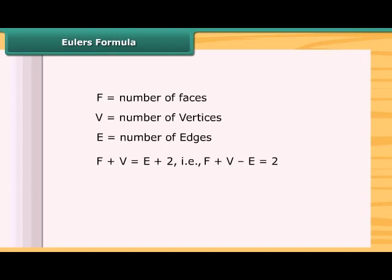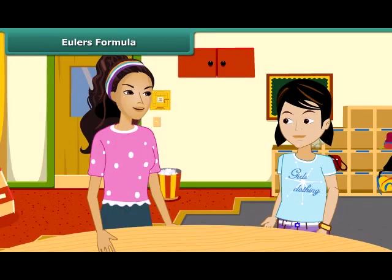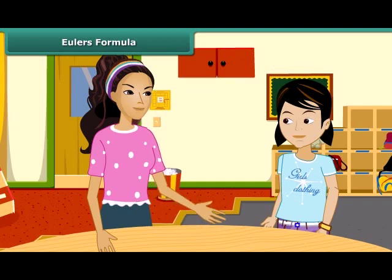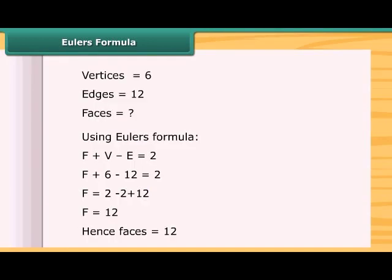This formula is true for any polyhedron. If the number of vertices and number of edges of a polyhedron is given, then we can find the number of faces using Euler's formula. And if the number of faces and number of vertices are given, then we can find the number of edges. Given any two values, we can find the third using Euler's formula.